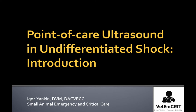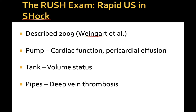The RUSH exam, or Rapid Ultrasound in Shock, was first described in 2009. It involves a three-part bedside physiologic assessment simplified as the pump, the tank, and the pipes. The evaluation of the pump allows a clinician to assess cardiac function and rule out pericardial effusion. The tank helps assess volume status. The pipes portion is less applicable to veterinary patients, as its main goal in human medicine is to detect deep vein thrombosis in lower extremities, which rarely occurs in dogs and cats.